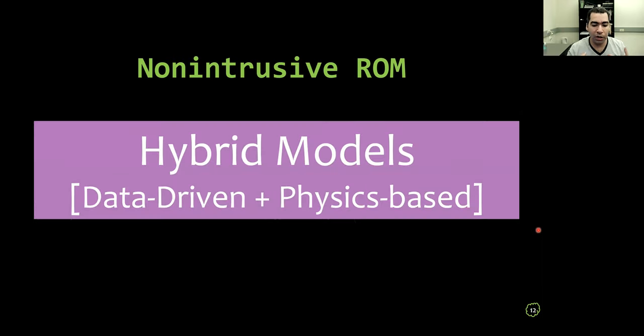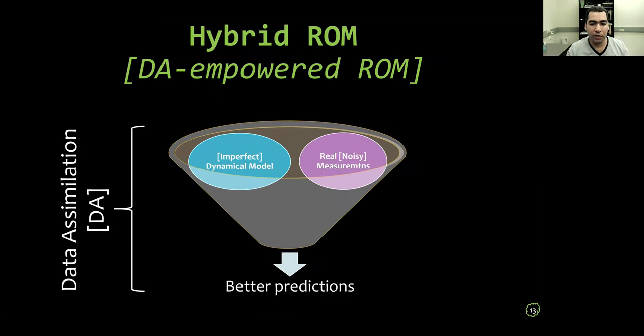So we believe, and actually not only our team, but everyone believes that it is better to have some hybrid models, which combine data-driven tools with physics-based foundation or models. So one way to do this is through data assimilation, which is an elegant approach or a family of approaches that aim at combining or fusing available dynamical models with measurement data to provide some better predictions. And the good thing about data assimilation is that it inherently assumes that the model is imperfect or insufficient, and the data are noisy. So we believe it is a perfect candidate for hybrid models.